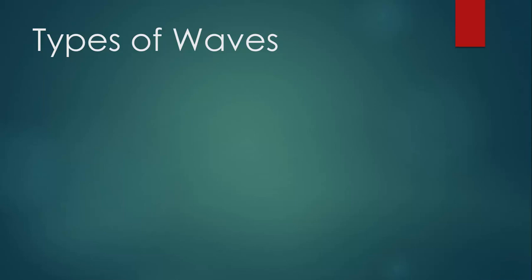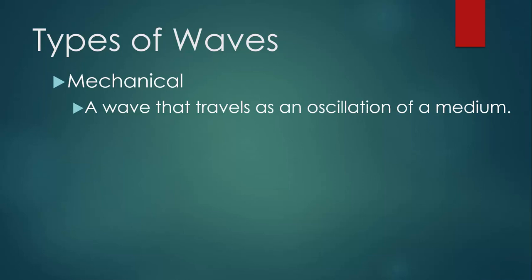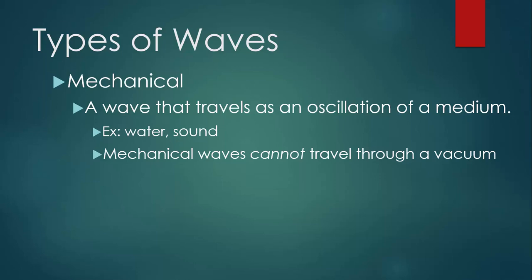There are two main types of waves. The first is called mechanical waves. This is a wave that travels as an oscillation of a medium. Examples of mechanical waves are water and sound. Water waves are the oscillation of water molecules, and sound waves are the oscillation of air molecules. Mechanical waves cannot travel through a vacuum because they require something physical to be there oscillating in order for the energy to transfer.